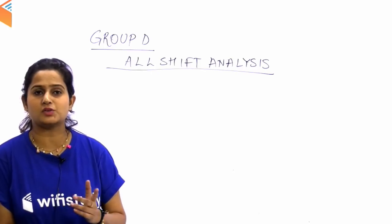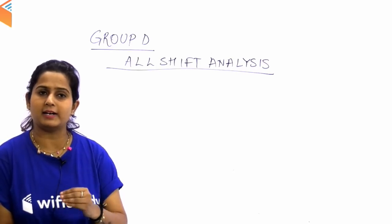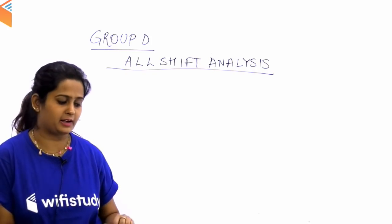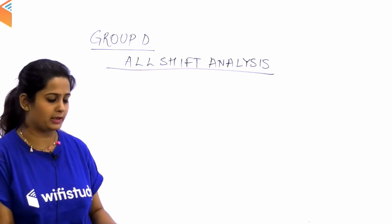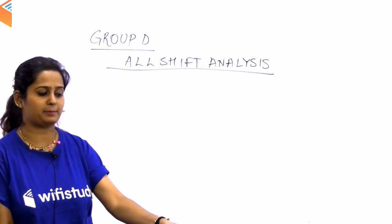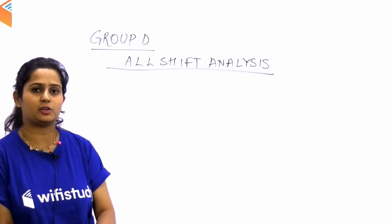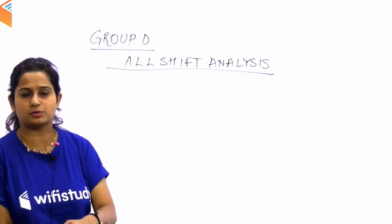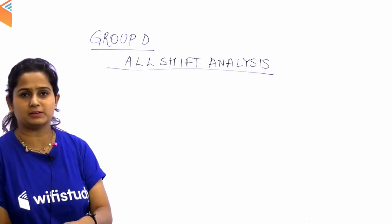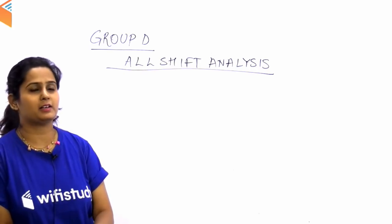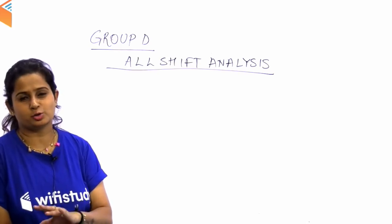Image कहाँ बनेगी यह learn कर लीजिए — यह आपको exam में आगे definitely पूछे जाने वाले हैं. अगर आए तो formulas याद कर लीजिए — alkyne, alkene, ketone और यह सारे groups को लेकर. सारी important चीजें आपके लिए दी गई हैं, इनको revise कर लीजिए.